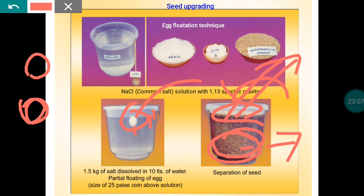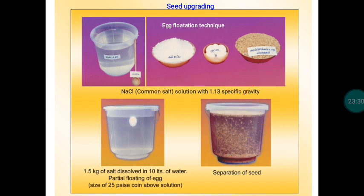After separation, the good quality seeds settled at the bottom must be thoroughly washed to remove the salt solution, as residual salt can create problems during sowing. After washing, if you sow these separated seeds, germination will be good and the resulting seedlings will show more vigorous, steady growth. This is a very popular technology that most farmers follow for upgrading paddy seed quality.